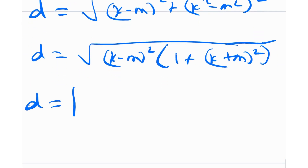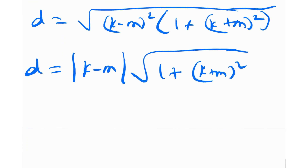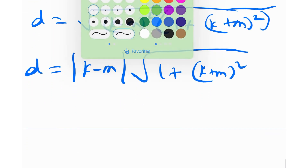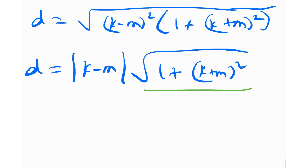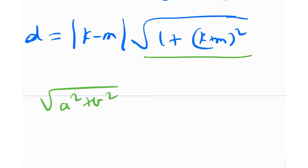Taking (k−m)² common, d = |k−m| · √[1 + (k+m)²]. Remember: √(x²) = |x|, not just x. Now this quantity √[1 + (k+m)²] will always be irrational, because √(a² + b²) is always irrational unless both a and b are zero — and here we have 1 and the non-zero quantity (k+m), so d is irrational.